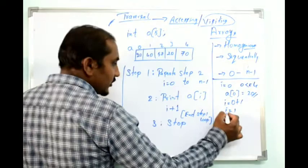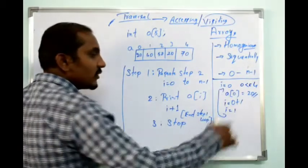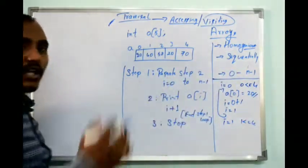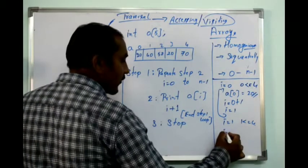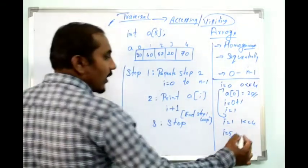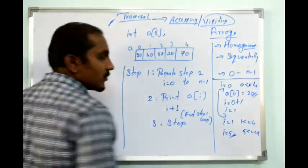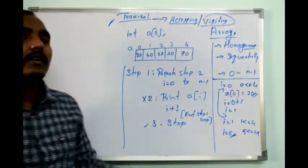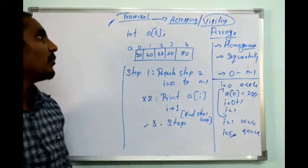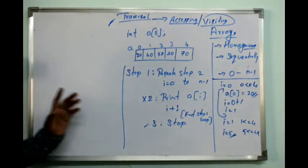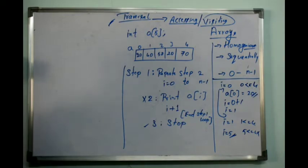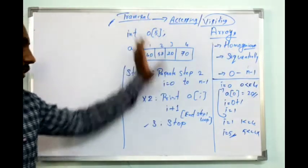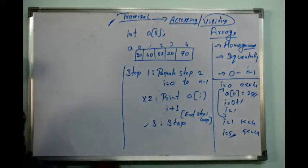This step repeats again. With i equals 1, 1 is less than or equal to 4, and the loop continues until i reaches 5. Once i reaches 5, the condition 5 less than or equal to 5 becomes false and we go to step 3 which is stop. This covers traversal using an array.